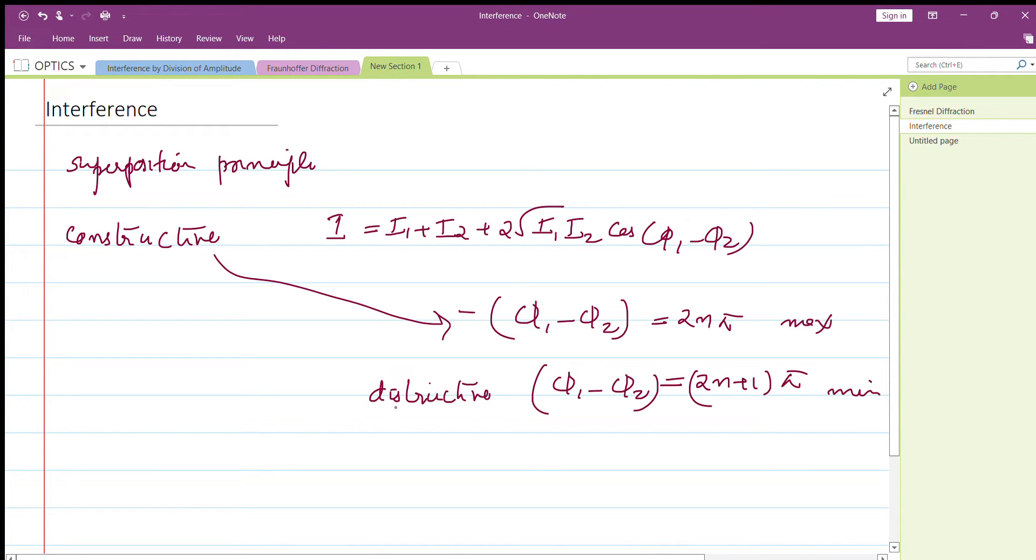The equations for the conditions are: for constructive interference, 2nπ in terms of wavelength. For destructive interference, this is 2n+1 λ/2. Now the equation is very important. This equation is the condition for instance.